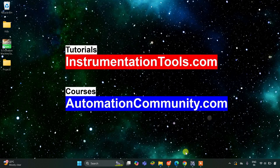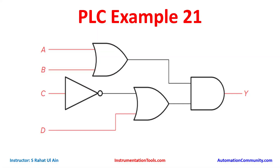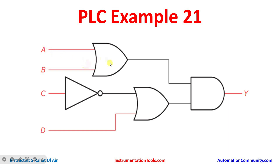Hello everyone, welcome to Automation Community. Today in this video we are going to develop ladder logic from a digital logic circuit. Let's look at the example — Example 21. There are four inputs: A, B, C, and D. For A, B, and D we will be using normally open contacts, and for C there is a NOT logic gate, so we will use a normally closed contact.